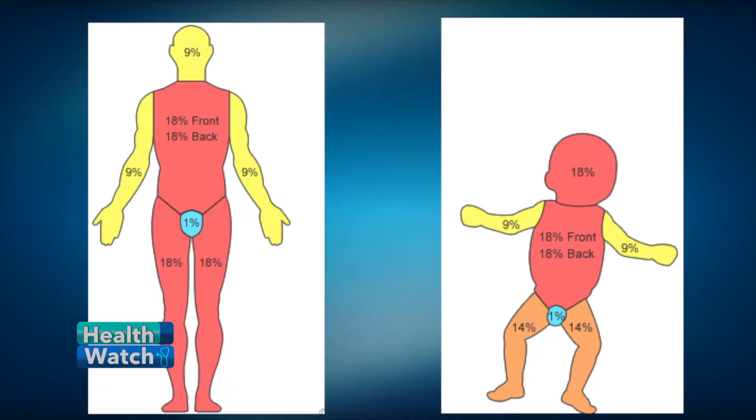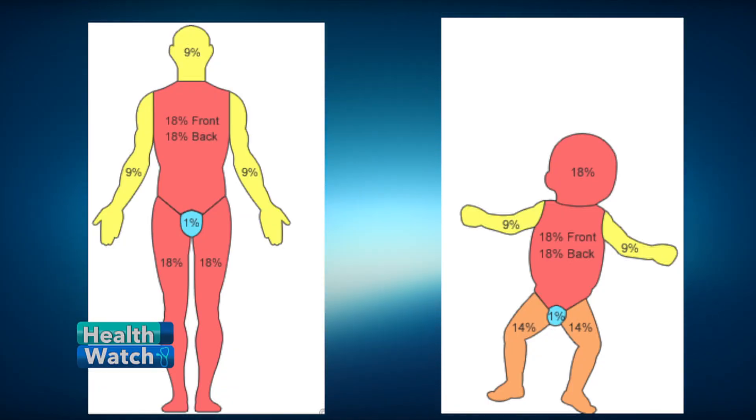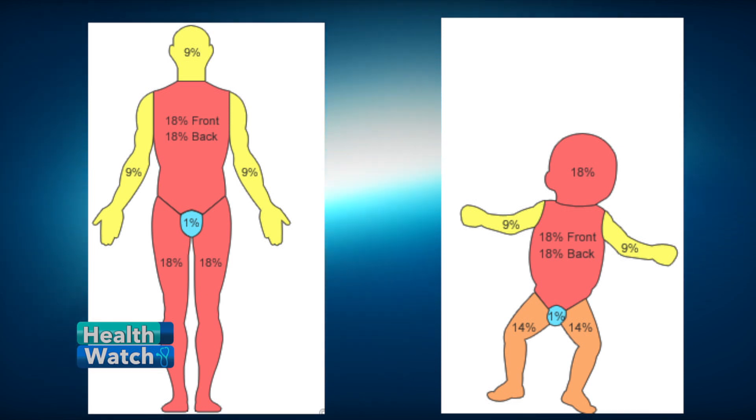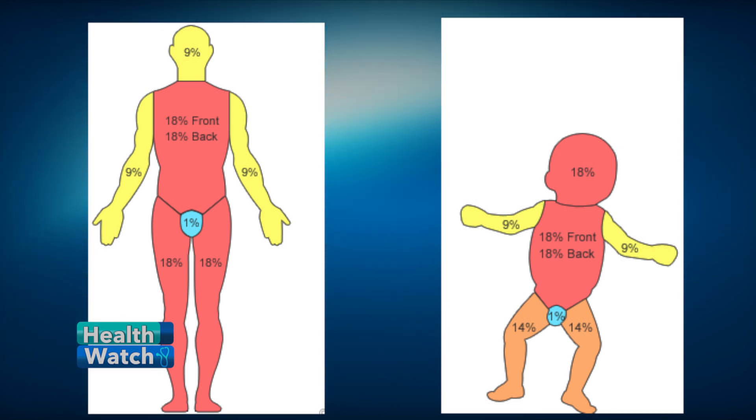The first thing would be trying to improve living conditions and ensuring there is a responsible adult present during cooking, because more than 70% of cases occur when older children are present but are not attentive enough to ensure that the younger, smaller children are safe.